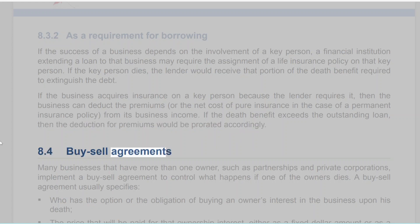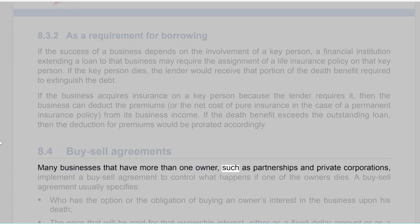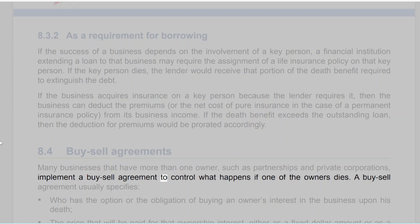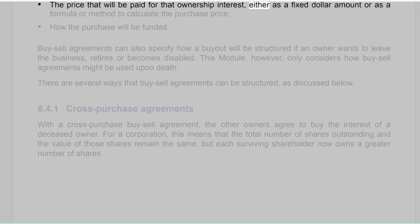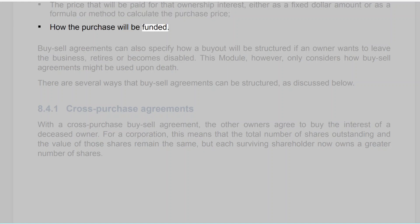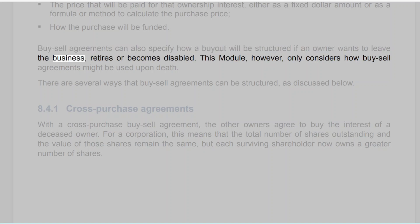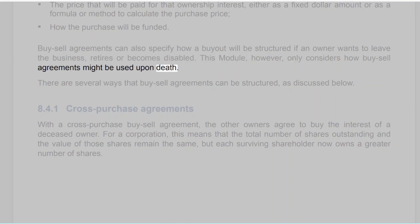8.4 Buy-Sell Agreements. Many businesses that have more than one owner, such as partnerships and private corporations, implement a buy-sell agreement to control what happens if one of the owners dies. A buy-sell agreement usually specifies: who has the option or obligation of buying an owner's interest in the business upon his death; the price that will be paid for that ownership interest, either as a fixed dollar amount or as a formula to calculate the purchase price; and how the purchase will be funded. Buy-sell agreements can also specify how a buyout will be structured if an owner wants to leave the business, retires or becomes disabled, though this module only considers how buy-sell agreements might be used upon death.